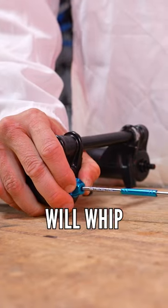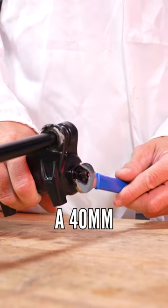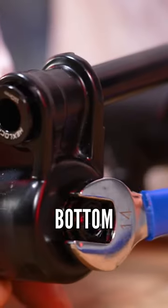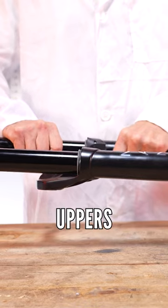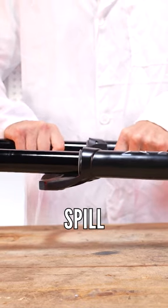A 2-mil Allen key will whip off the rebound adjuster, then a 14-mil spanner to undo the nuts at the bottom of the legs. Carefully remove the uppers from the lowers, making sure not to spill any oil.